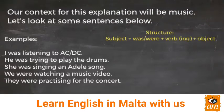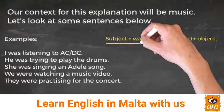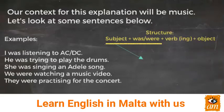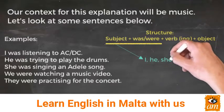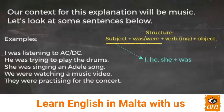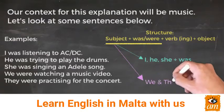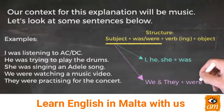The structure is: subject plus was or were, plus the verb with -ing, and the object. For the subject plus was or were: if the subject is I, he, or she, then this goes with 'was'. But if the subject is we or they, then this goes with 'were'.